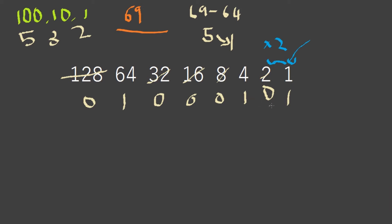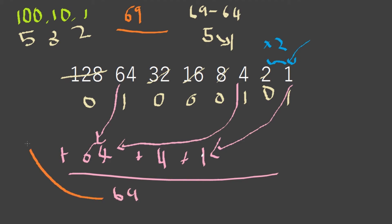What does that make? We have 64, and then we have 4, plus 1. We add this together and this gives us 69, which was our number we got above.